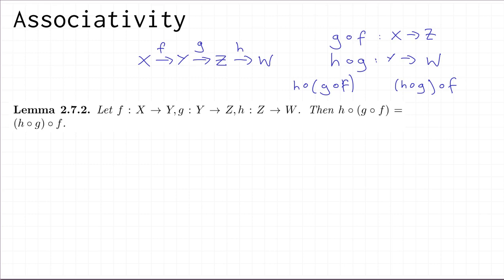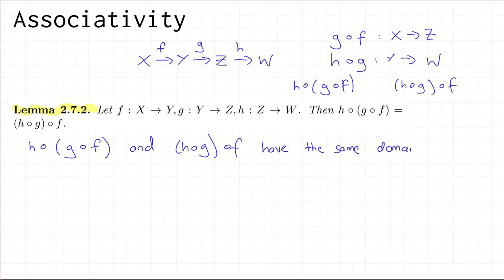What the associativity property says is that these two compositions are in fact equal. The result states: if f: X→Y, g: Y→Z, and h: Z→W — meaning the codomain of f equals the domain of g, and the codomain of g equals the domain of h — then h∘(g∘f) = (h∘g)∘f. To show two functions are equal, we must verify they have the same domain, same codomain, and the same output for every input. Both compositions have domain X and codomain W.